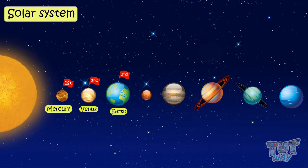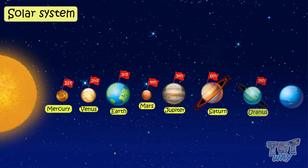Then comes Mars. Then, Jupiter. Then, Saturn. Then, Uranus. And Neptune, in the last, which is farthest from the sun.